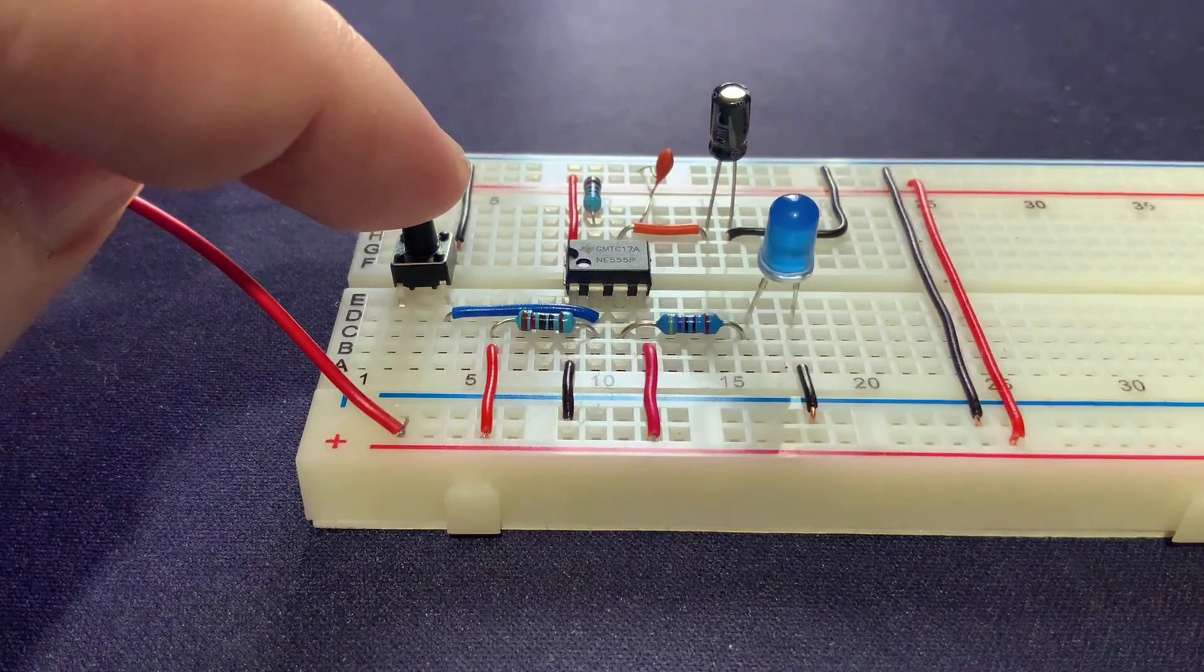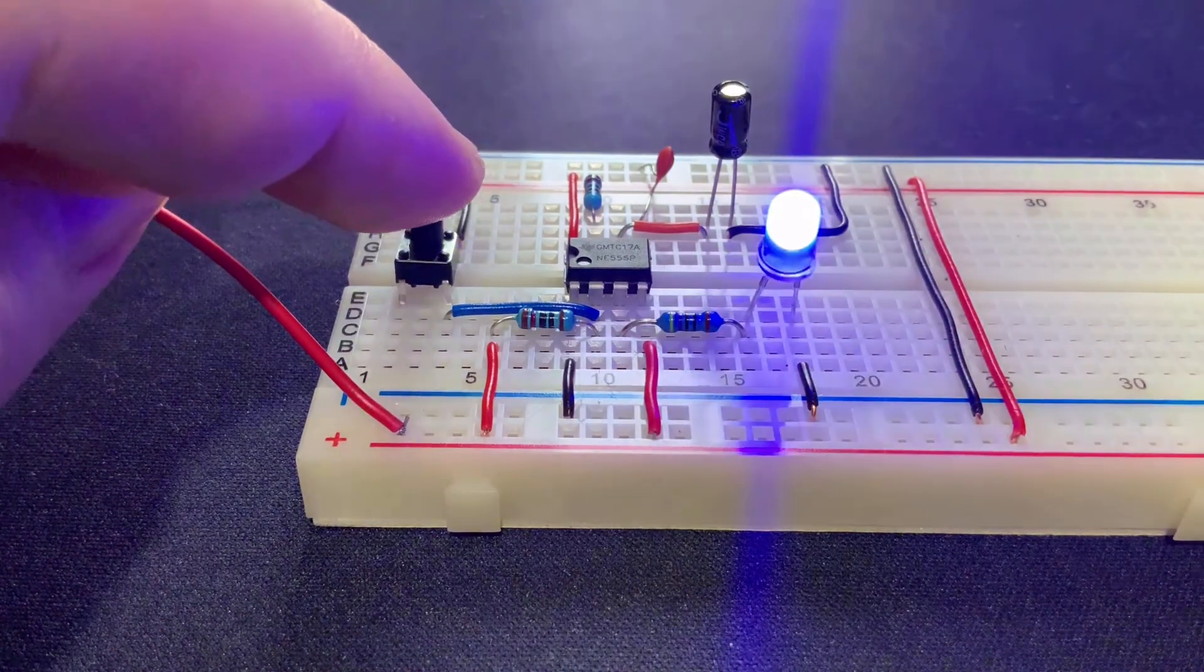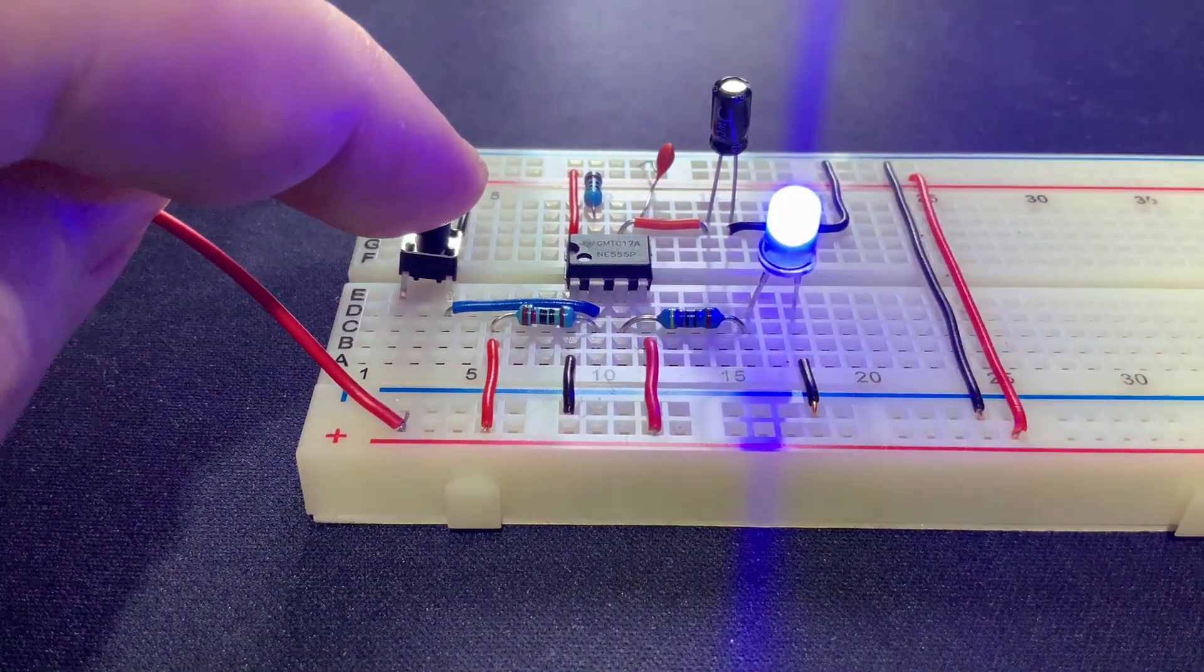Each trigger pulse provides a single output pulse, and when the time interval is reached, that output pulse stops, and the circuit resets until a new pulse is detected.